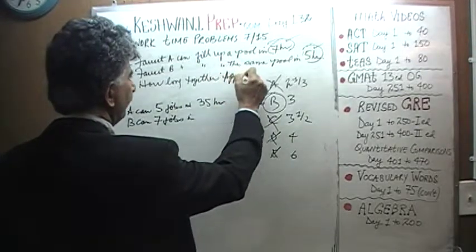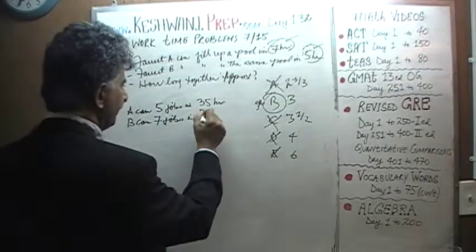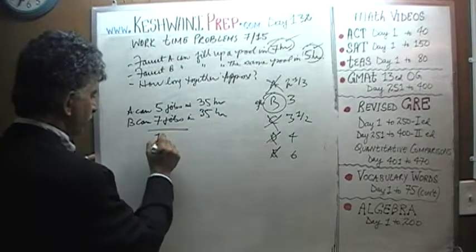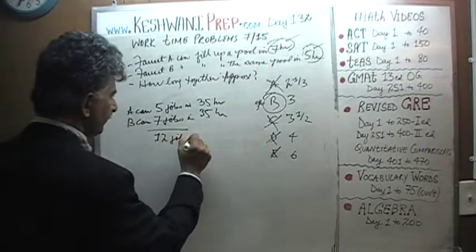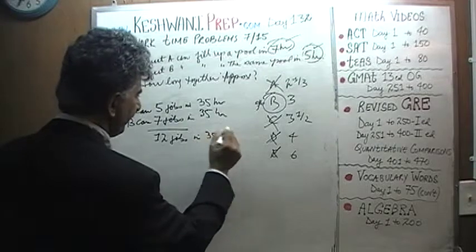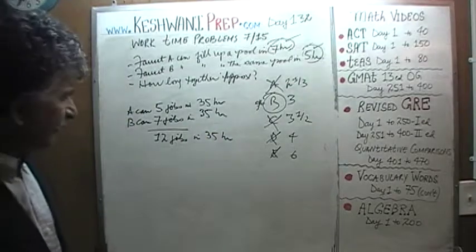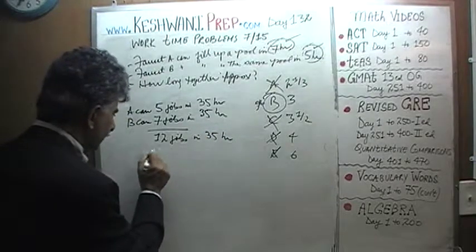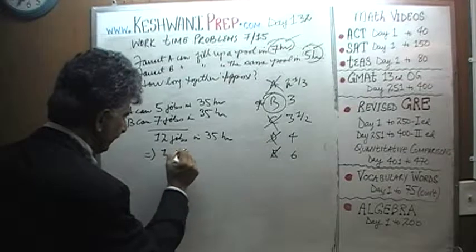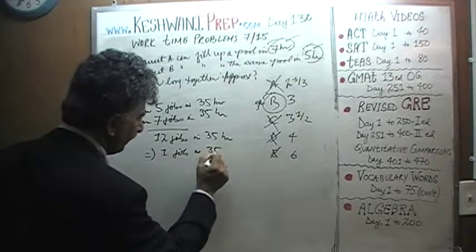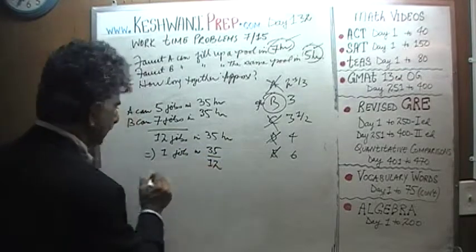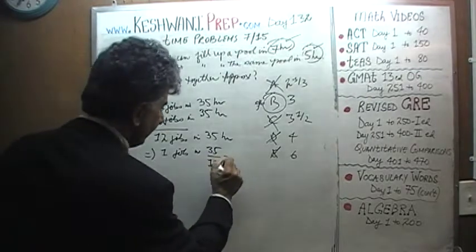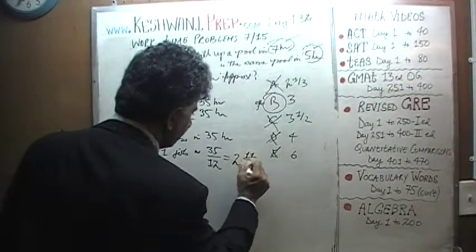It should say approximately in 35 hours. They should be able to do 12 jobs, 12 jobs in 35 hours. Therefore, they should be able to do one job in 35 over 12. 35 over 12 is the same as 2 and 11/12.